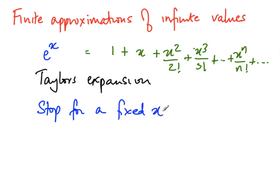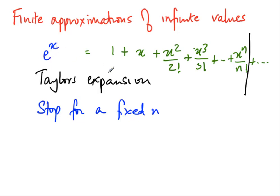What we would normally do when computing this is stop at a fixed n — we take this series and do not go on forever, but rather stop at some point. The question is: if I only compute the first n or n+1 terms of the series, how far away am I from the real answer e^x? This is the truncation error — the difference between the actual value e^x and the value computed from the series up to n terms.